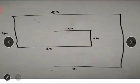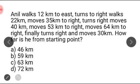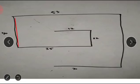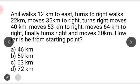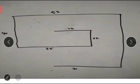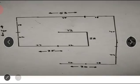Let's check our diagram. He moves 12 kilometers to the east, then 22 kilometers to the right (south), then 35 kilometers to the right (west), then 40 kilometers to the north, then again right towards east, then again right. We have to find how far he is from the starting point.